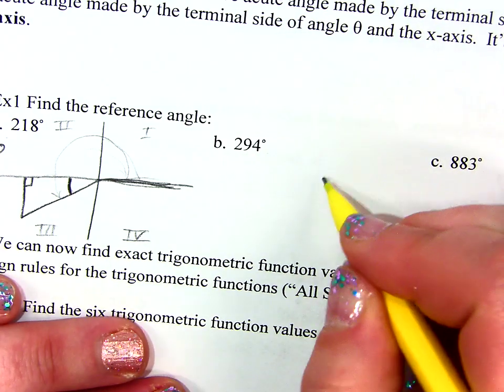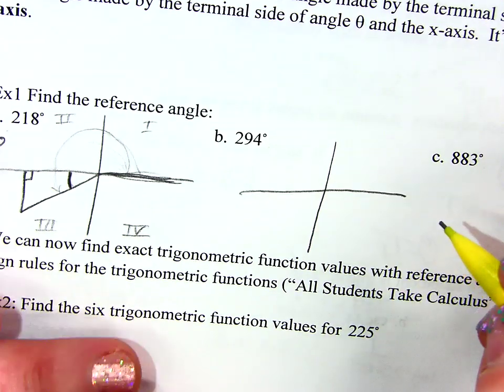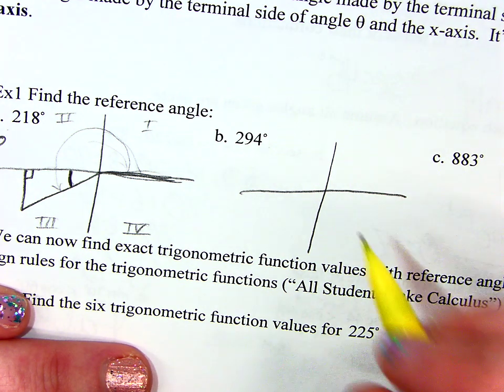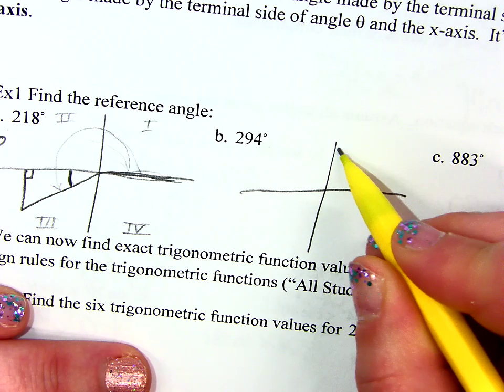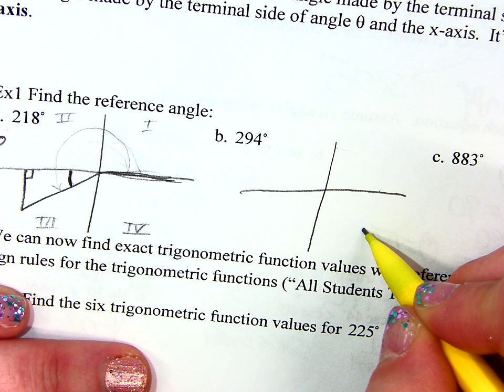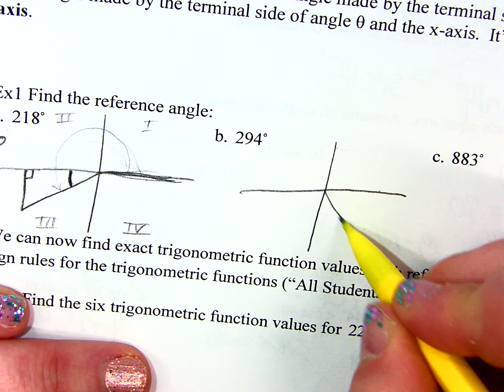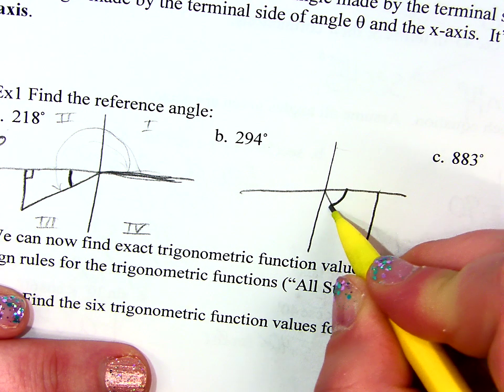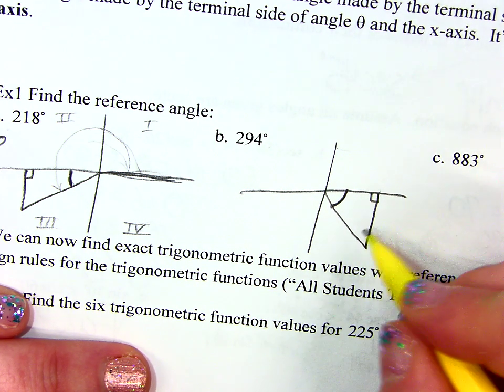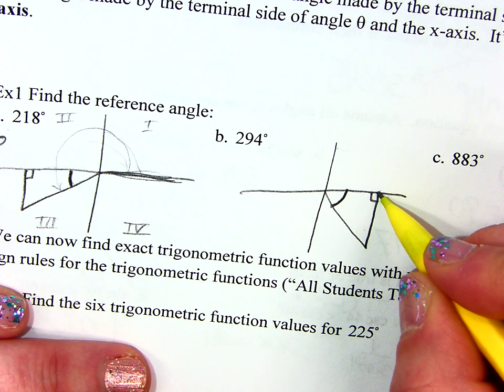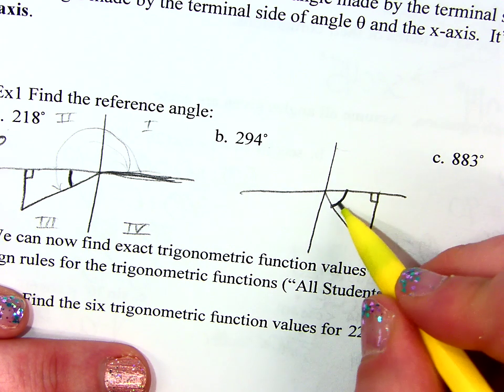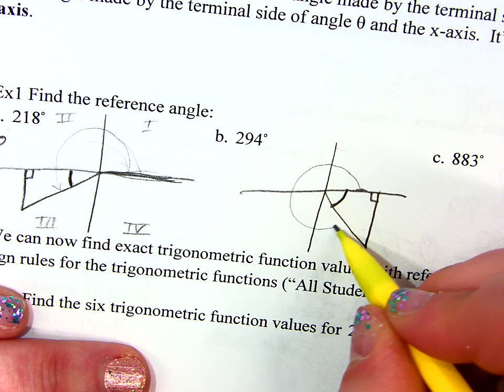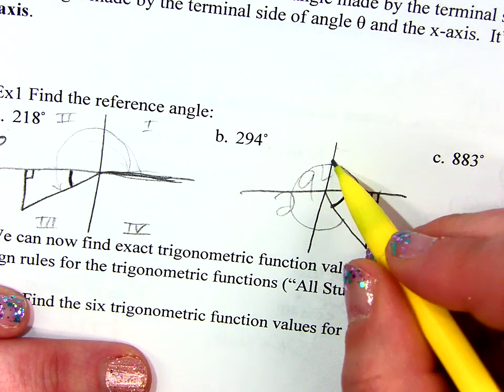Okay, let's try it for 294. So you have some options. I'm going to be in the fourth quadrant, right? Because I'm past 270. So remember what I'm looking for. I'm looking for this angle.